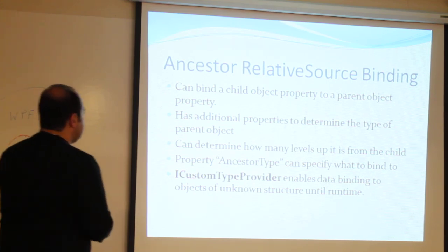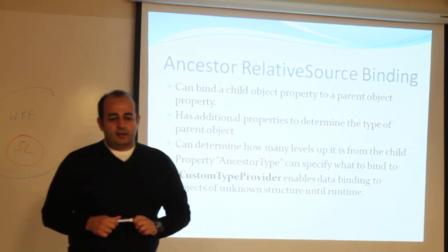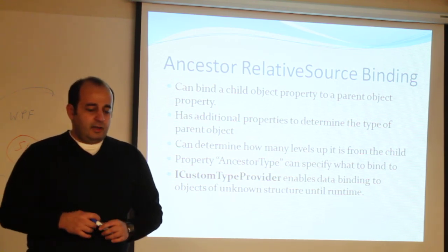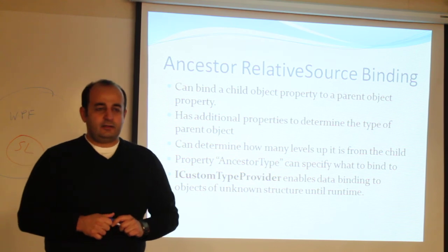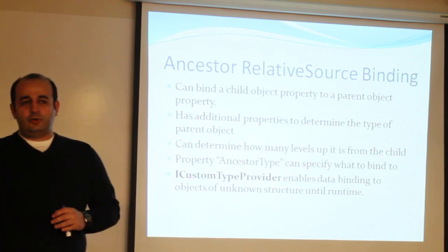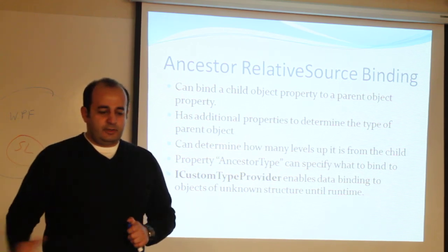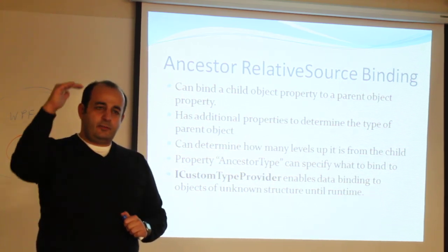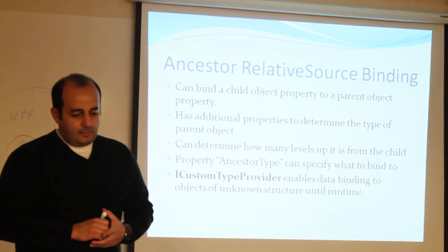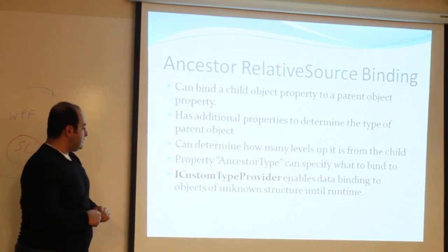Ancestor and relative source binding basically combines a child object property to a parent object, and allows us to add additional properties to determine the type of the parent object. We can determine how many levels up it is from a child. In a WPF or Silverlight application, controls are built up in a tree — you have the parent, children underneath, and children of children. This allows us to indicate how many levels up we can go to bind them, so things have the same look and feel. There's an ancestor type property which can specify what to bind to, and we'll see a demo shortly.